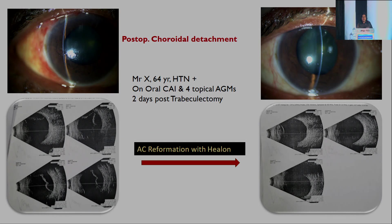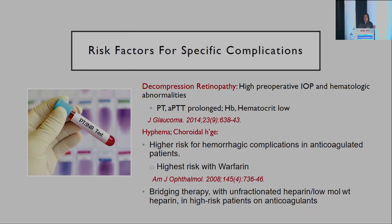One of my patients developed post-operative choroidal detachment. At surgery, there was tight closure, the AC was well formed, and the bleb was well formed — everything seemed great. But this patient was hypertensive, on oral carbonic anhydrase inhibitors and multiple anti-glaucoma medications, and two days post-trabeculectomy I saw a choroidal detachment. Fortunately the patient responded to AC reformation with Healon, but multiple medications and hypertensive patients are more prone to this.